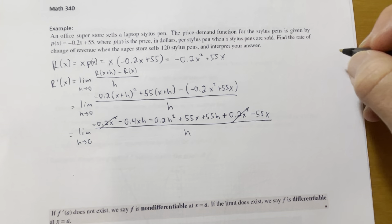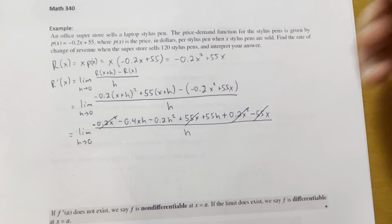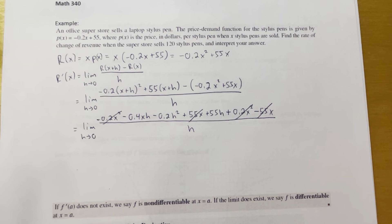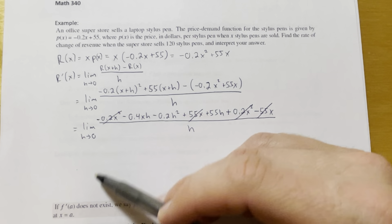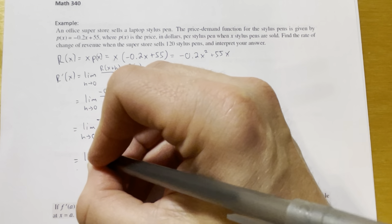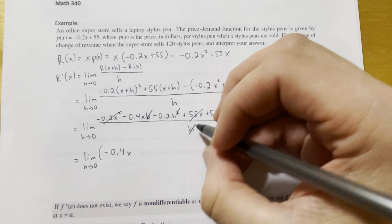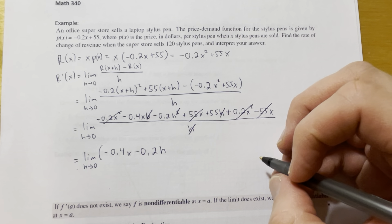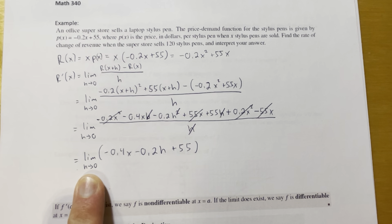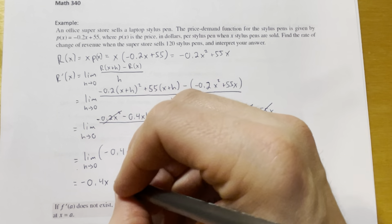Now for the cancellations: negative 0.2X squared and positive 0.2X squared cancel, and 55X and negative 55X cancel. The three remaining terms all have an H in them, so we can cancel the H's. We're left with the limit as H approaches 0 of negative 0.4X minus 0.2H plus 55. Using direct substitution and plugging in 0 for H, that middle term goes away, and we're left with the derivative: negative 0.4X plus 55.